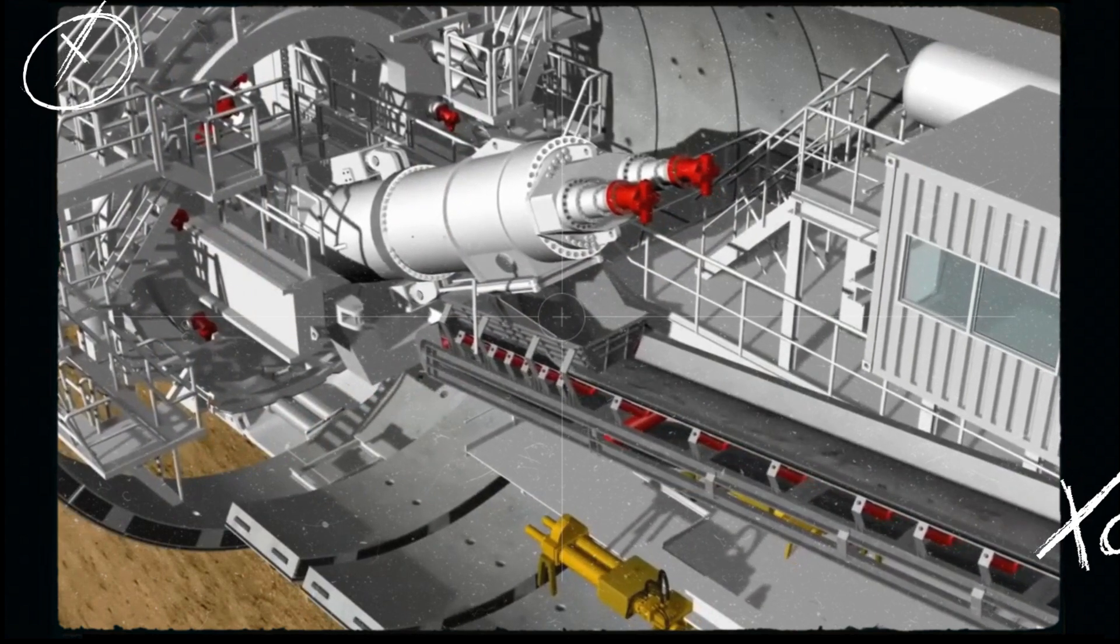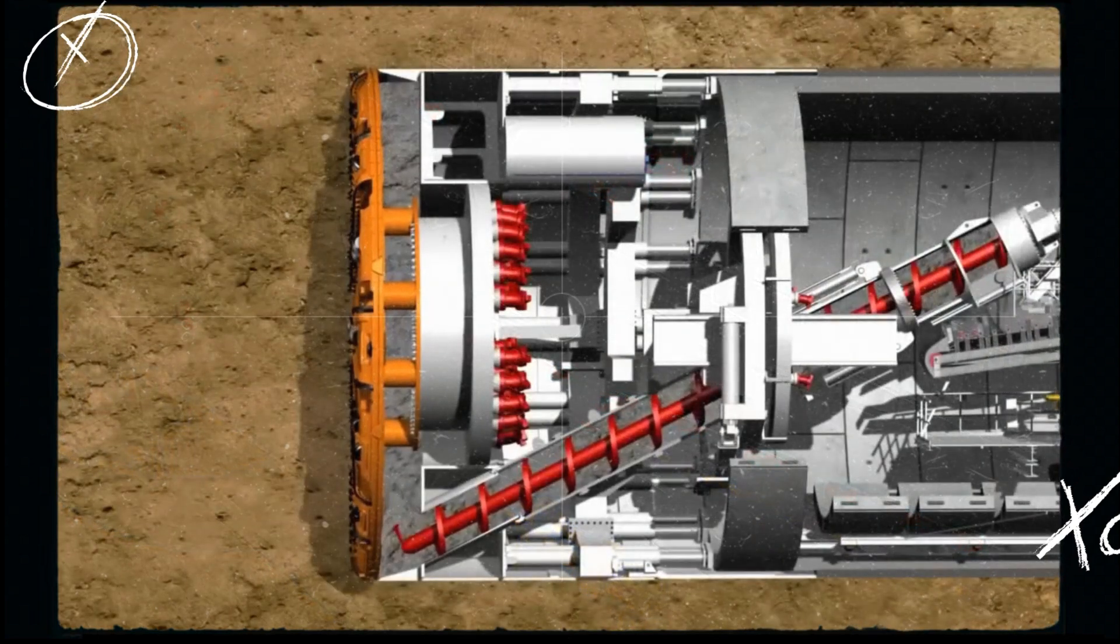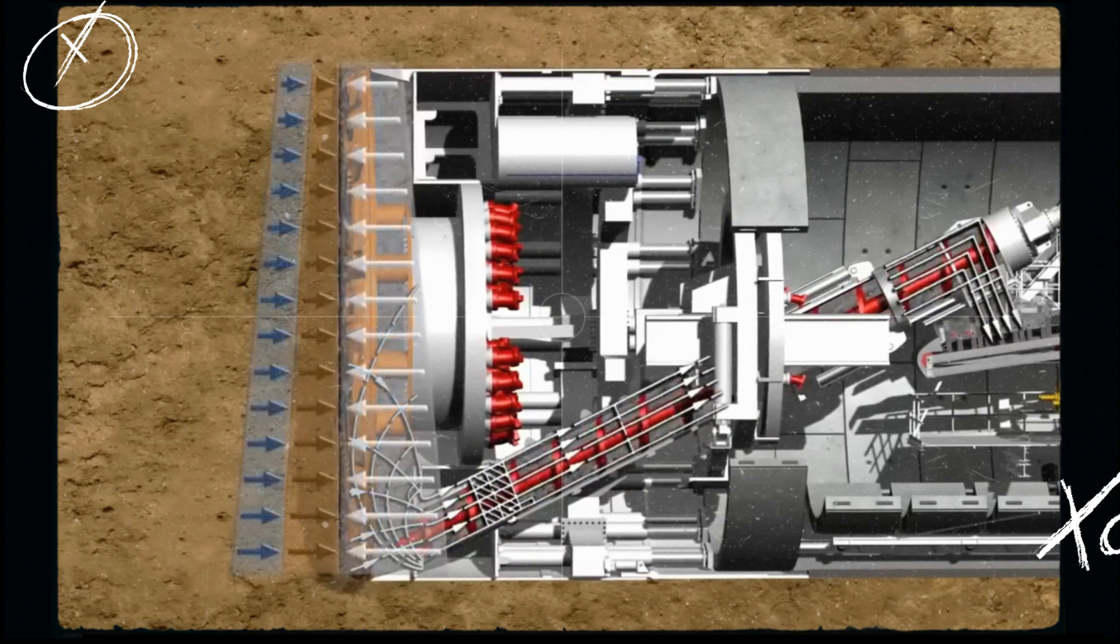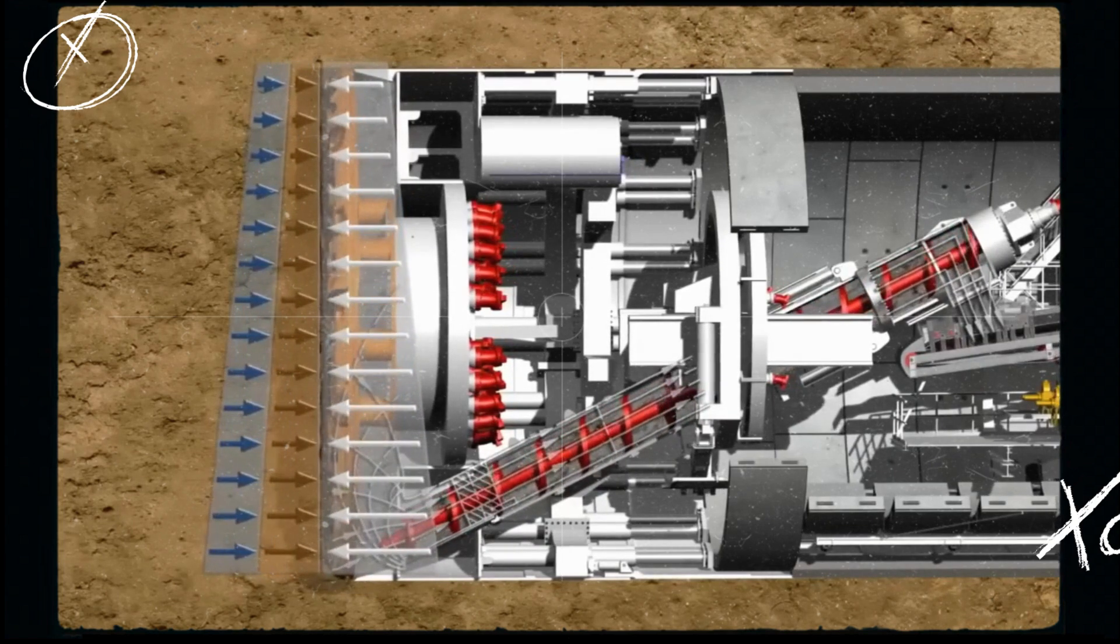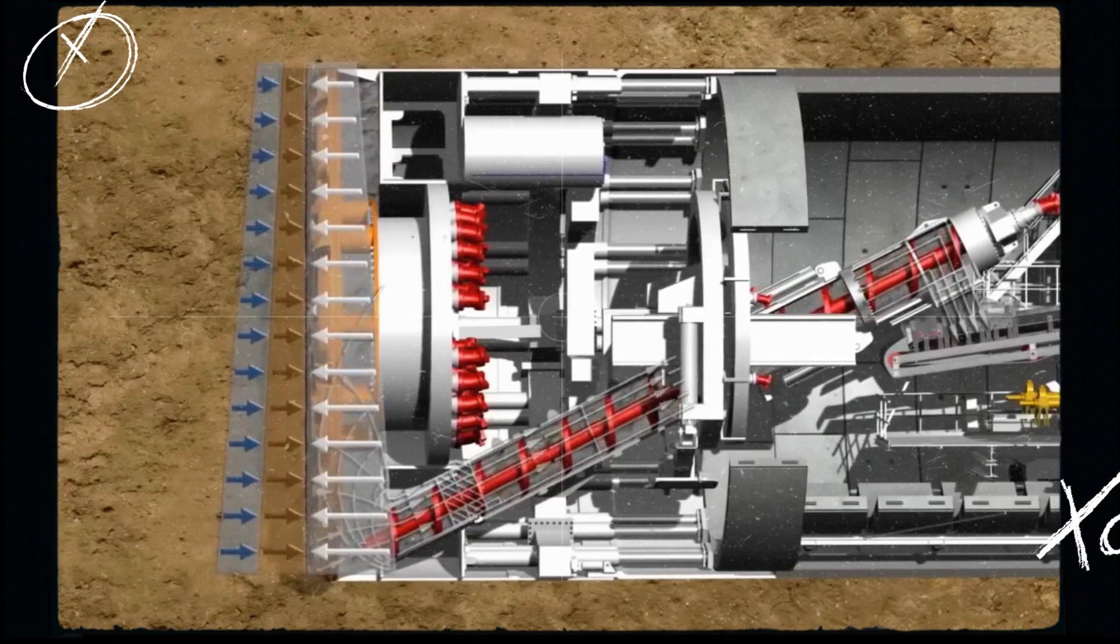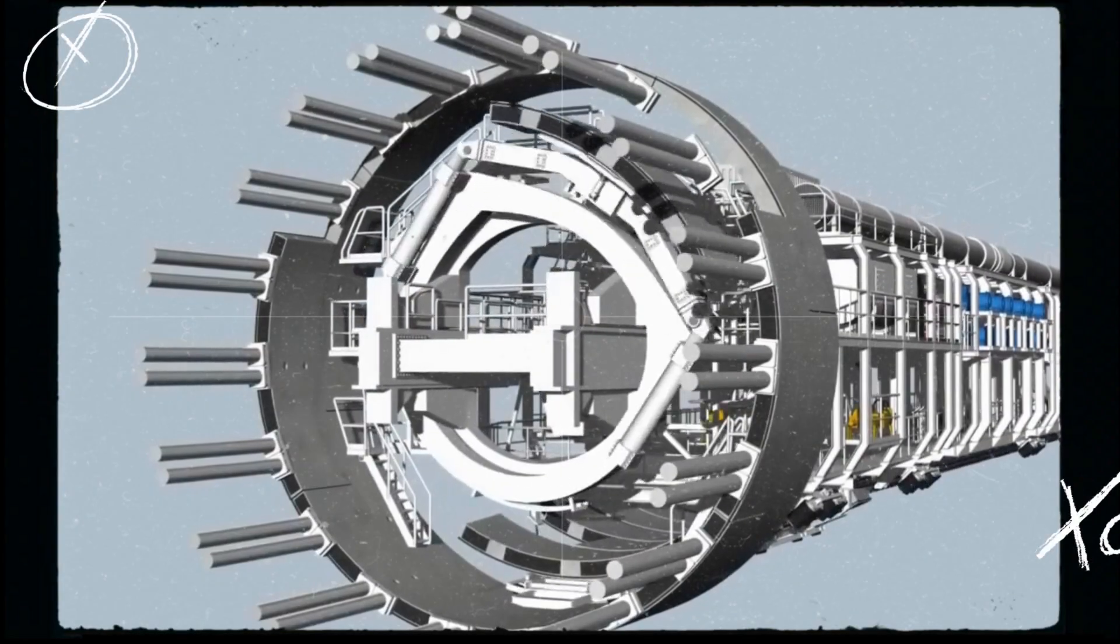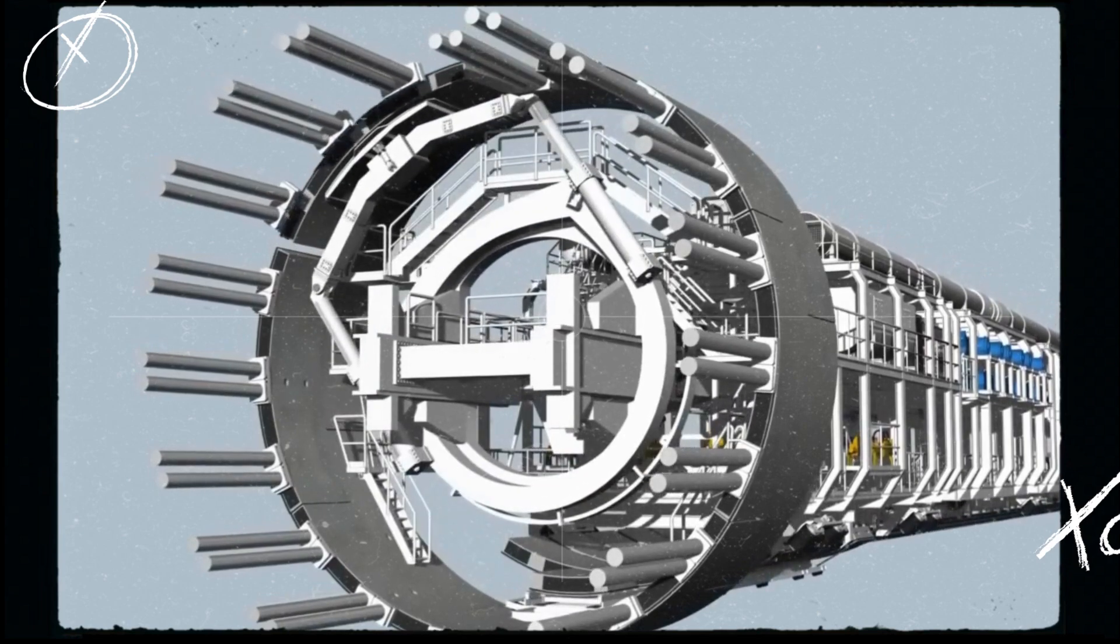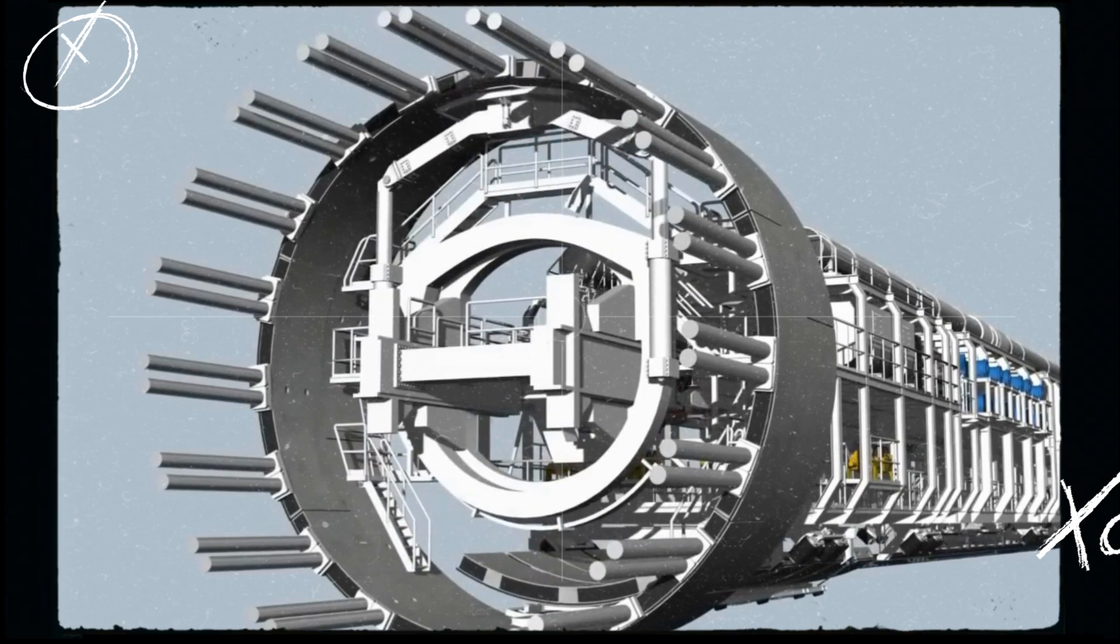Herenknecht TBMs feature advanced control systems for real-time monitoring and automated adjustments during operation, improving safety and efficiency. The hydraulic system controls the pressure and stability of the machine, while the integrated monitoring system tracks parameters such as the cutter head's performance, ground movement, and structural integrity.